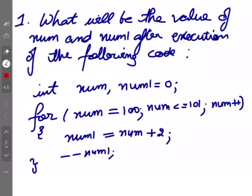Pehla question is what will be the value of num and num1 after execution of the following code. So we have these two variables - ek variable ka naam hai num, ek ka naam hai num1. Then we have a loop which starts for num, initialize hua num 100 ho gya. Condition kya hai num less than equal to 101.